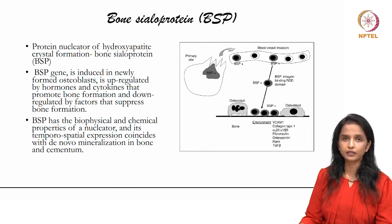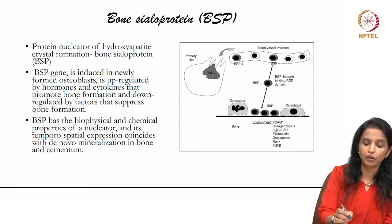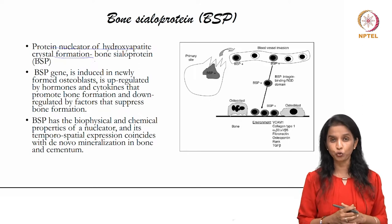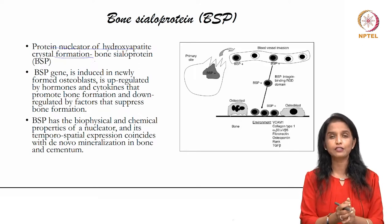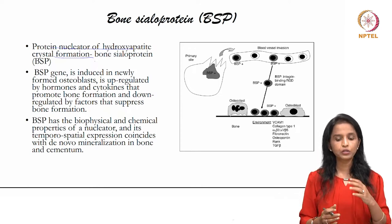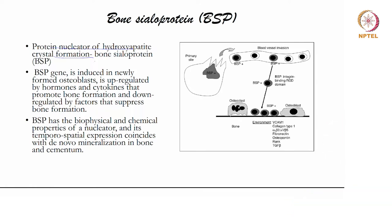Among the SIBLING family, bone sialoprotein is very important and acts as a nucleator of hydroxyapatite crystal formation. In heterogeneous nucleation, you need the presence of a nucleator for mineralization to happen. So bone sialoprotein acts as a nucleator to initiate the mineralization process, and it is induced in newly formed osteoblasts and upregulated by hormones and cytokines.